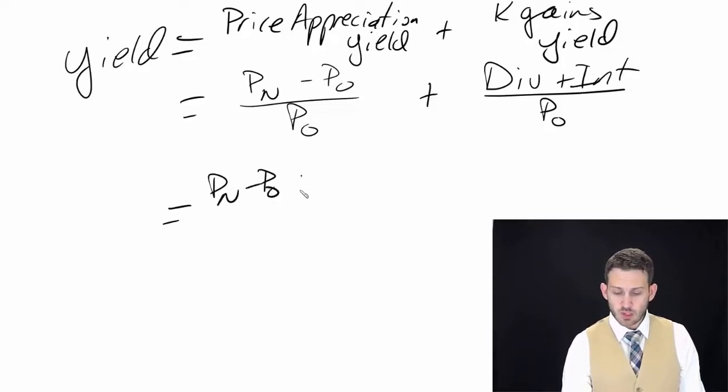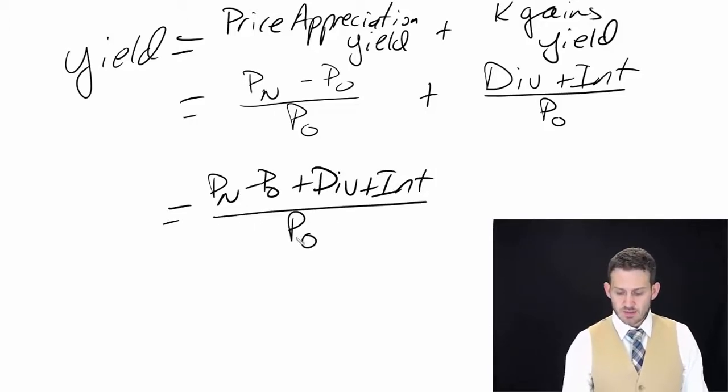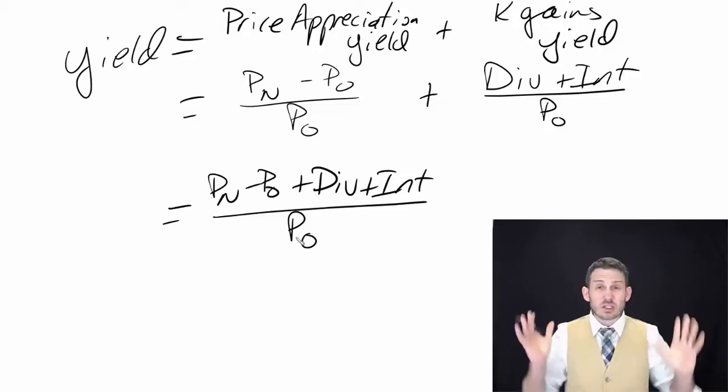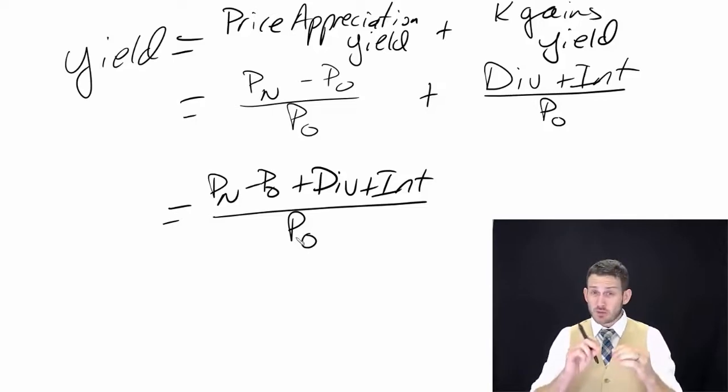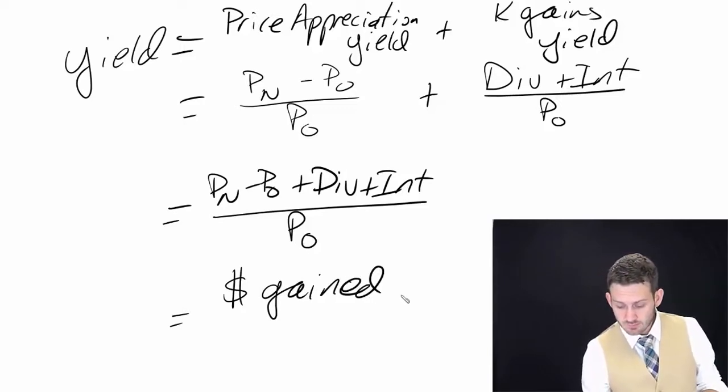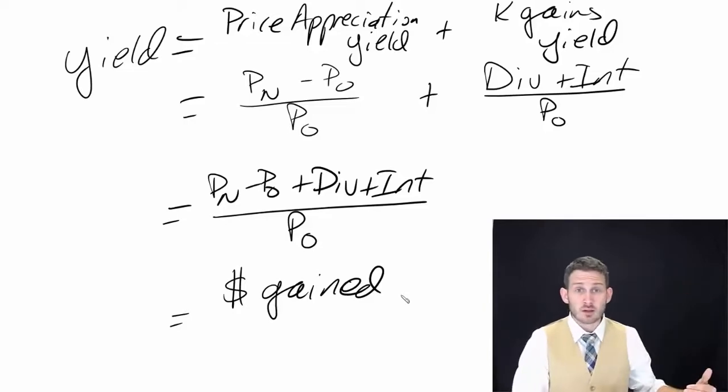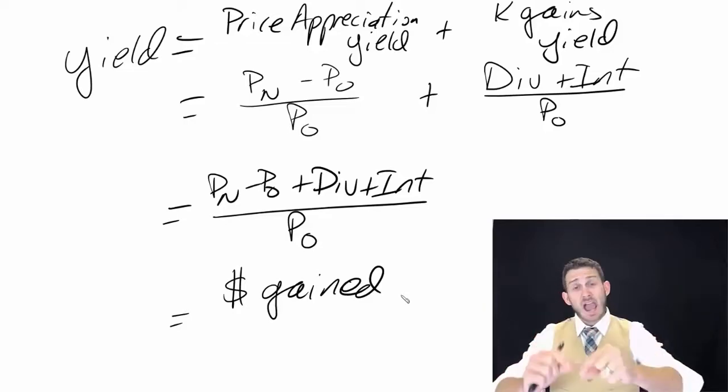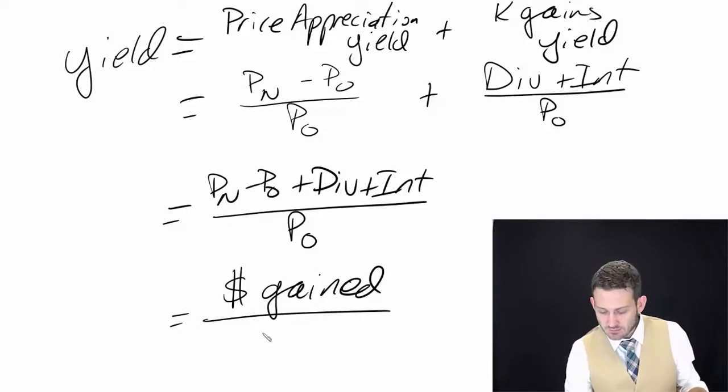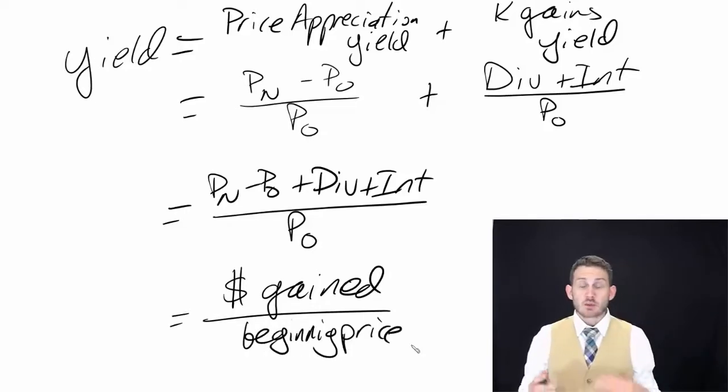Don't let that equation intimidate you. It's really not that difficult. What's on the numerator, the top of this equation, is the dollar amount gained. How much did we actually gain? We bought this stock for $80, it went up to $83, and it paid a $1 dividend - how much did I actually gain? What was the dollar amount I gained above the price - or below, because I can lose money here - above the price I paid? That's divided by the beginning price. It's actually pretty straightforward. Let's give a quick example.